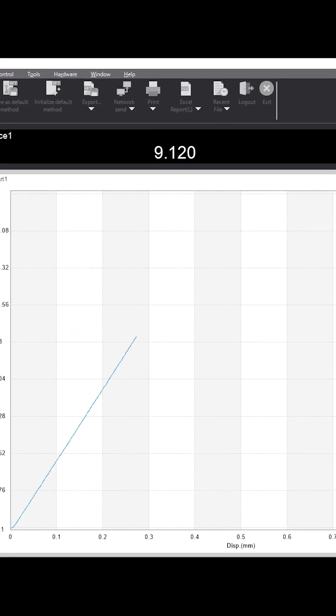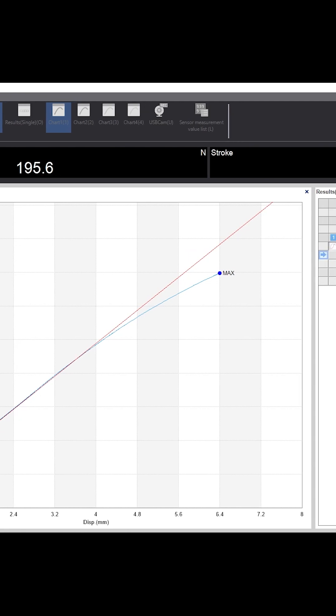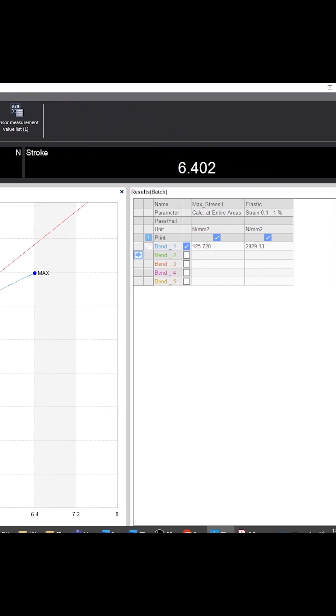Data analysis is made easy by Shimadzu's Trapezium XV software which allows for quick calculations of bending strength, strain, and modulus of elasticity.